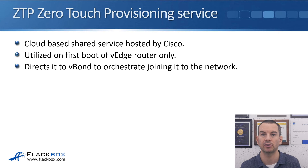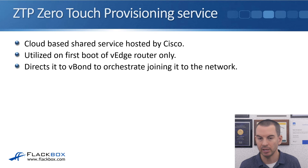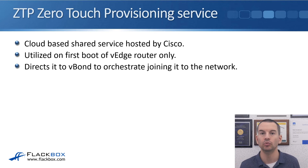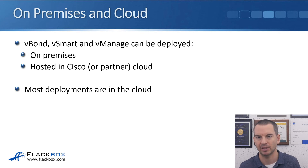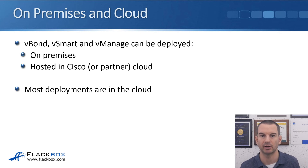ZTP, or Zero-Touch Provisioning, is a cloud-based shared service hosted by Cisco, utilized on first boot of the V-Edge router only. It directs the V-Edge router to V-Bond to orchestrate joining the network. When you first take a physical router out of the box and plug it in, it connects to the cloud-based service at Cisco, which tells it how to reach its V-Bond orchestrator. V-Bond then tells it how to reach the other components, it downloads its configuration, sets up the tunnels, and you're good to go. V-Bond, V-Smart, and V-Manage can be deployed on-premises or hosted in the cloud with Cisco or one of Cisco's partners — most deployments are in the cloud because it's an easier solution for the customer.